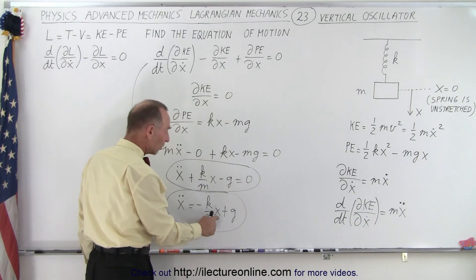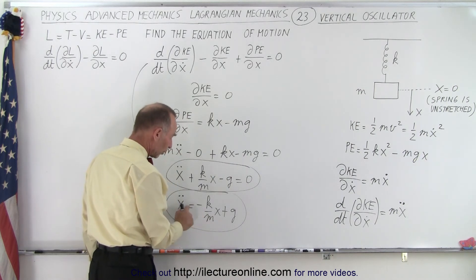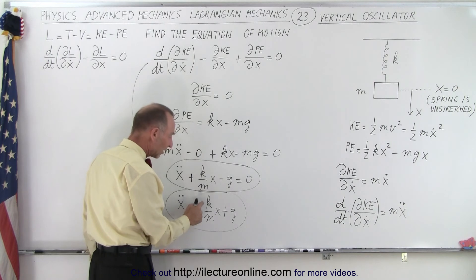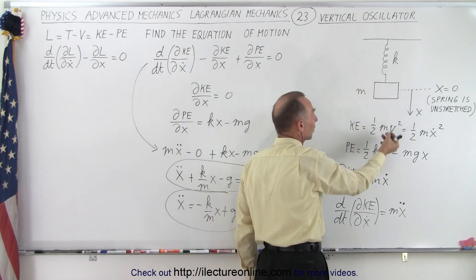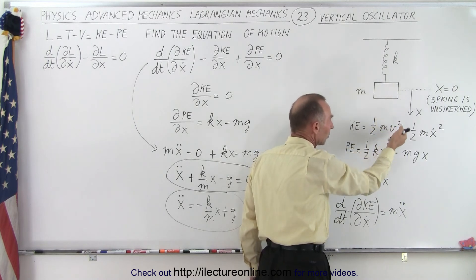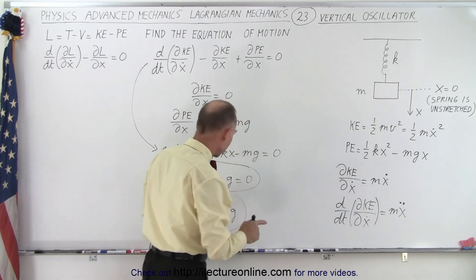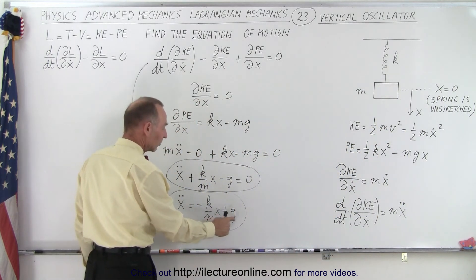But then as x begins to grow, it's going to reduce the acceleration by minus k over m times x. So as x gets bigger and bigger, the spring pulls back, and the acceleration will diminish until there's an equilibrium point, until this is equal to this.